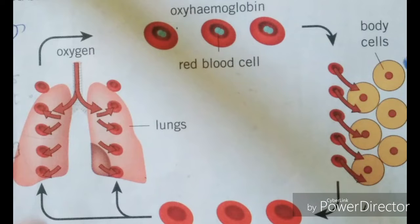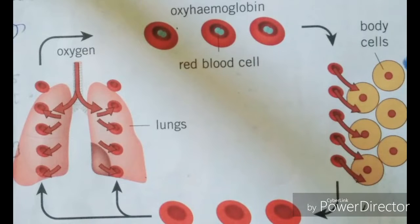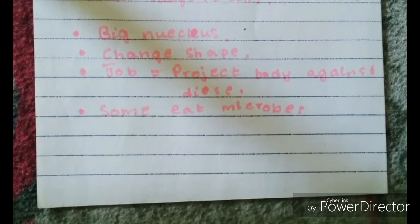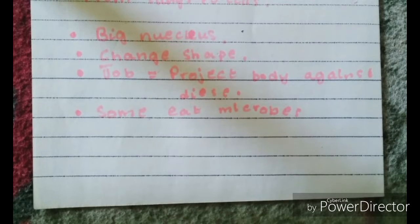This shows oxygen, hemoglobin, oxyhemoglobin, and blood cells. These are written for the white blood cells.